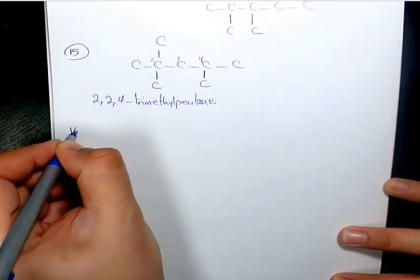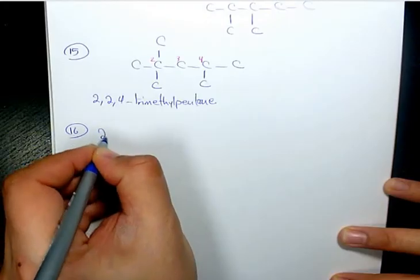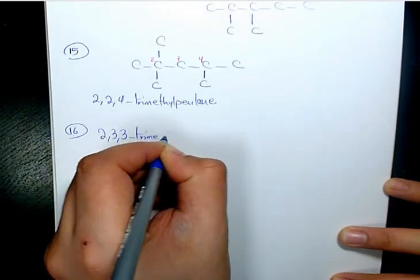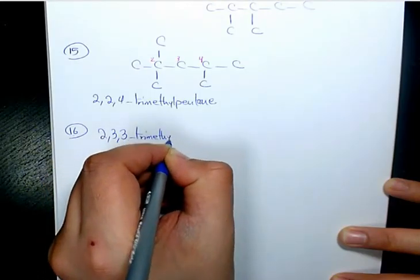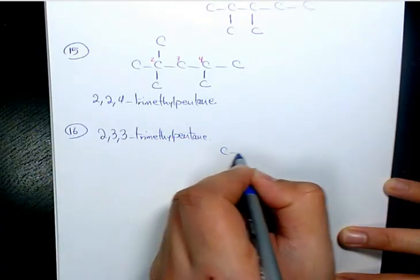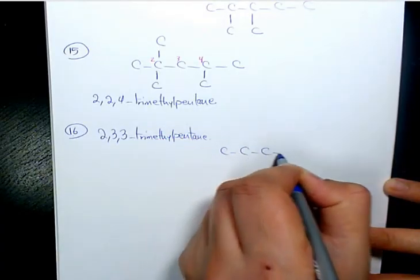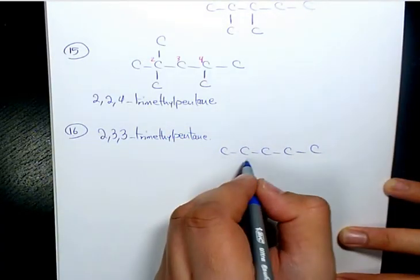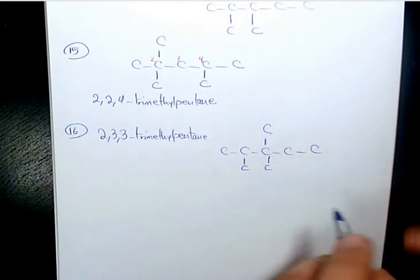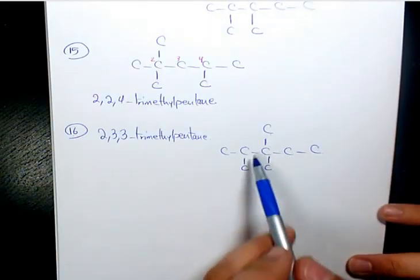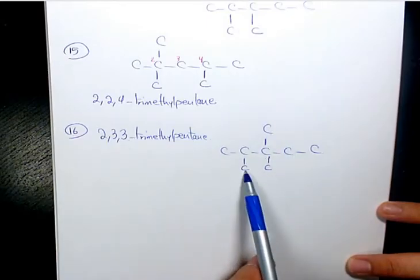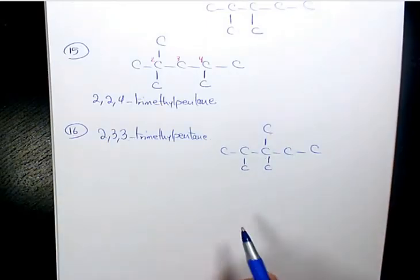Number sixteen is going to be 2,3,3-trimethylpentane: 1, 2, 3, 4, 5 — we have two methyl groups on the third carbon and one methyl group on the second carbon.